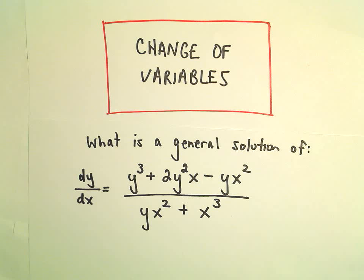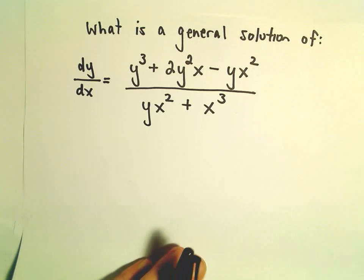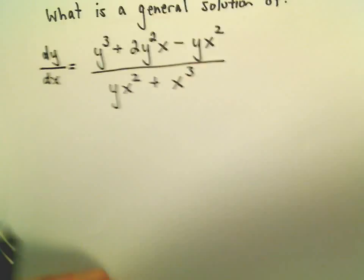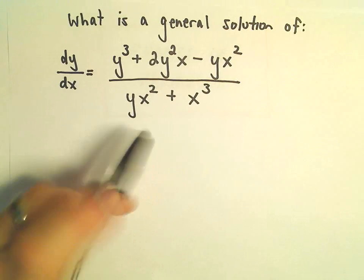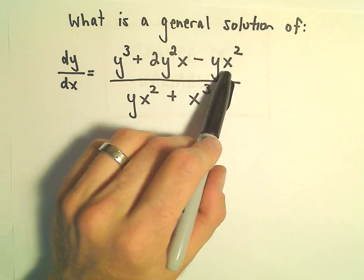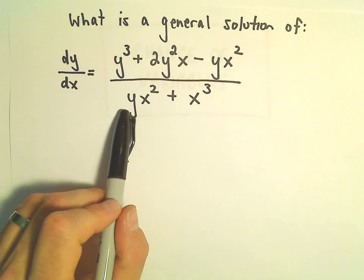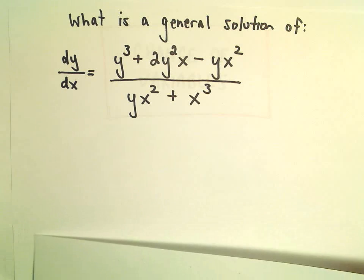One more example here of doing a change of variables to find a solution to a homogeneous differential equation. We're going to solve dy/dx equals y³ + 2y²x - yx², all divided by yx² + x³.